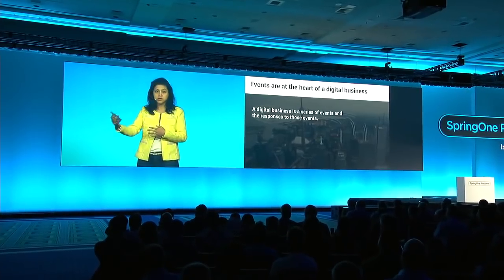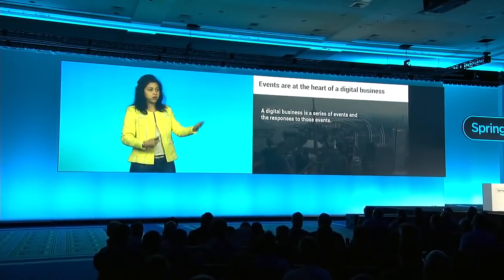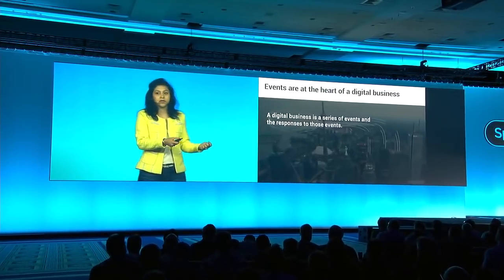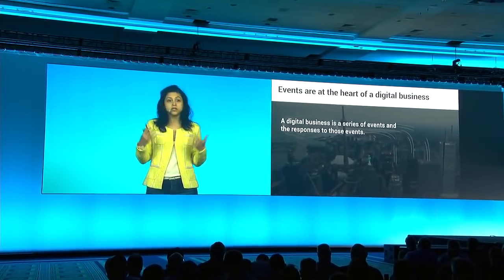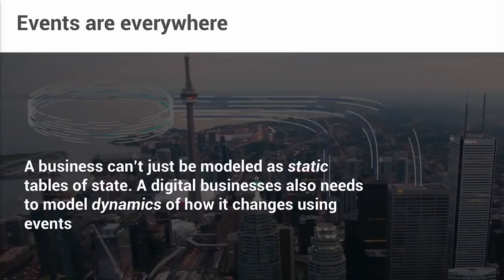What are some examples? When a credit card transaction happens, some software triggers its processing. When you request a ride, some software triggers its scheduling. 'When this happens, do that' is a very natural way of thinking about what a digital business is. Events that cause actions are really everywhere. A digital business can't just be modeled as static tables of state — you also need to model the dynamics of how that state changes. That's the 'what happened' part.